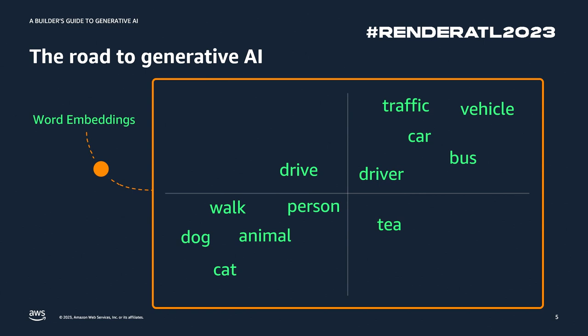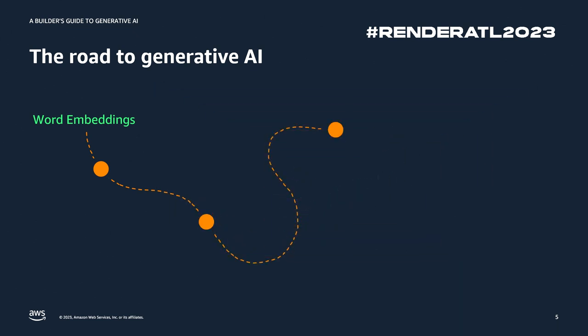We extrapolate this out to many other things — traffic, driver, person — we have this whole map of where different words fall on a graph. This is what you think of as a word embedding: we're turning text into numerical numbers that can be plotted on a graph. This is how we start up a language model — we have a way to take text and turn it into a numerical output that a model can understand. Models work on numbers, so we need a way to embed text into a form a model can process.